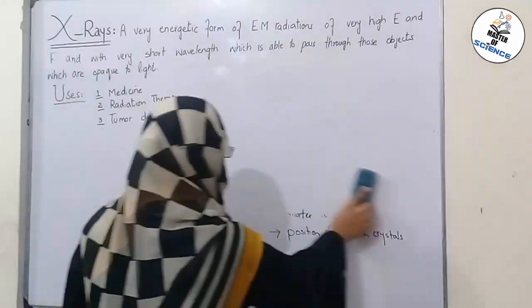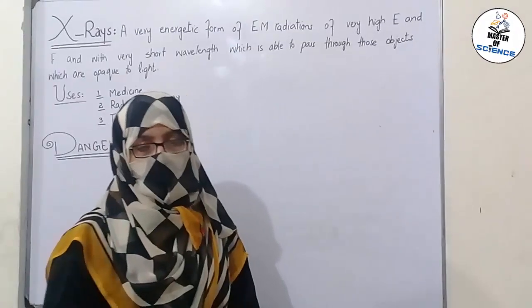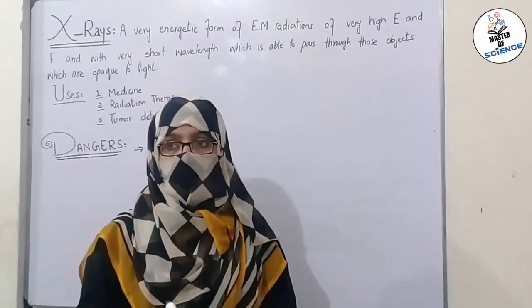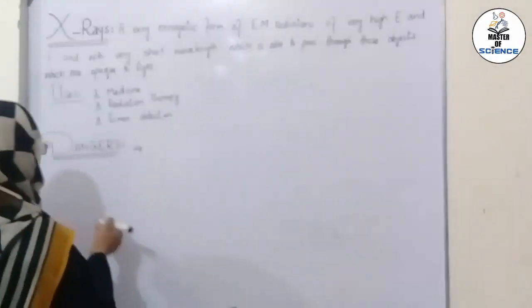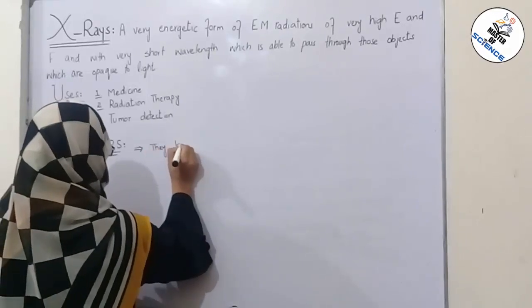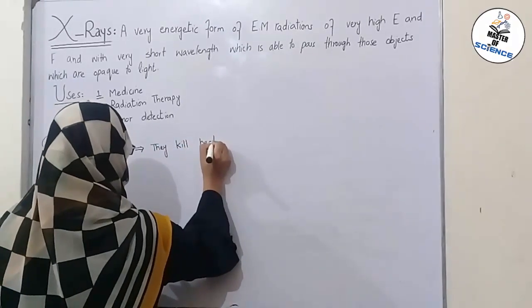Next, we will discuss its dangers. What are the dangers of X-rays? There are different dangers. First of all, because X-rays are used for treatment of cancers, many cancers within the body, they not only destroy or kill cancer cells but also kill healthy cells within the body. So first danger is that they kill healthy cells of human body.